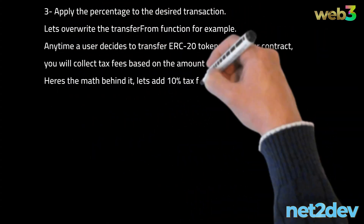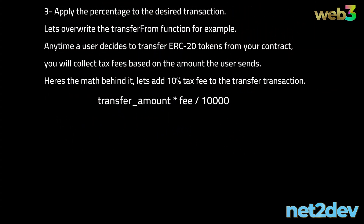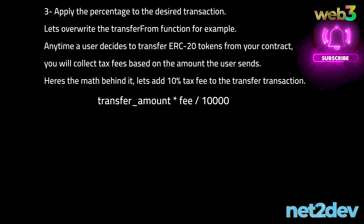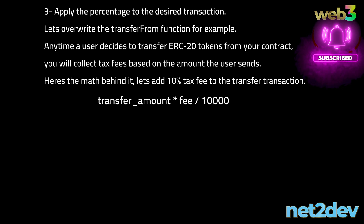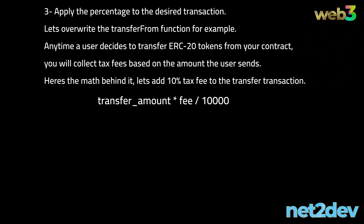Step 3 — now let's apply the percentage to the desired transaction. Let's overwrite the transferFrom function. For example, any time a user decides to transfer ERC-20 tokens to another wallet, we will charge a tax fee of 10% on the total amount of tokens to be transferred.